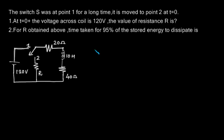This question was asked in instrumentation. The switch S was at position 1 for a long time and is moved to position 2 at t equal to 0. At t equal to 0 plus, the voltage across the coil is 120 volts. We are asked to find out the value of resistance R. The second part asks: for the R obtained, what is the time taken for 95 percent of the stored energy to dissipate?